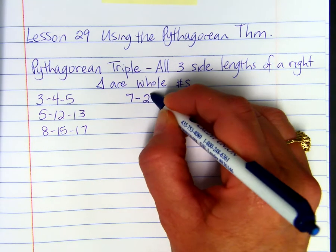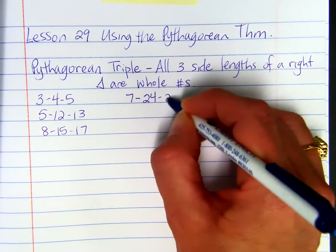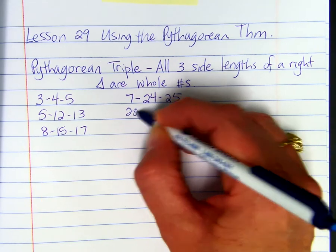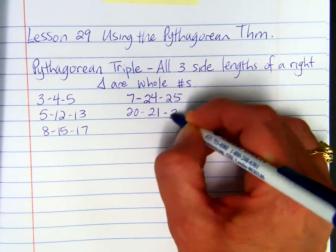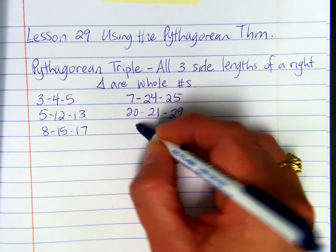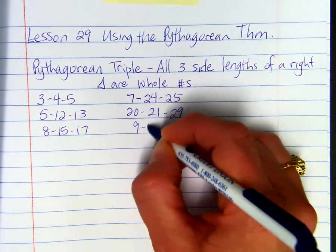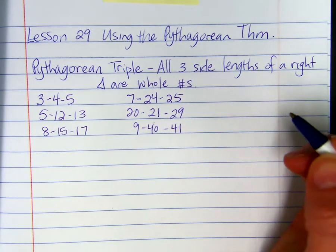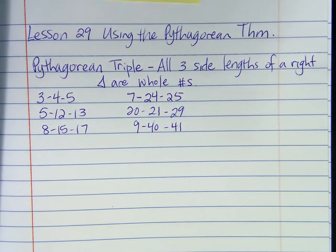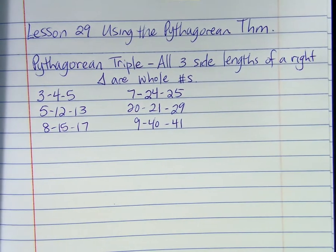More examples of triples: 7, 24, 25. And 20, 21, 29. And 9, 40, 41. So these are six examples of Pythagorean triples.